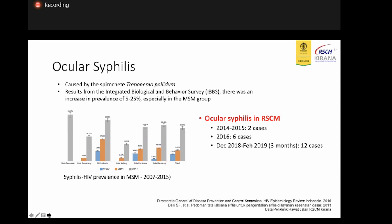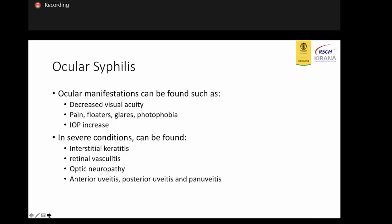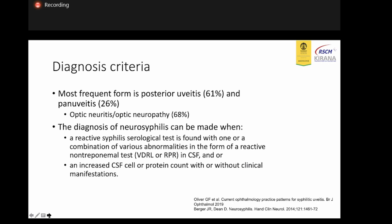Regarding the epidemiology of ocular syphilis in our hospital, we previously only had two cases in 2014–2015, but now the cases are increasing. Within three months, we had 12 cases. Ocular syphilis can present as decreased visual acuity, eye pain, photophobia, and sometimes secondary glaucoma. In severe conditions, we can also see interstitial keratitis, scleritis, retinal vasculitis, and optic neuropathy. The most frequent form is uveitis.